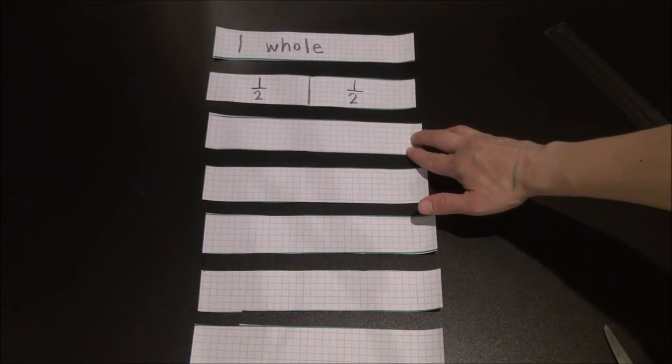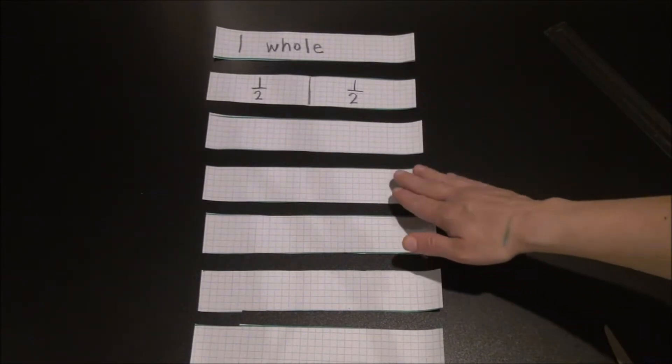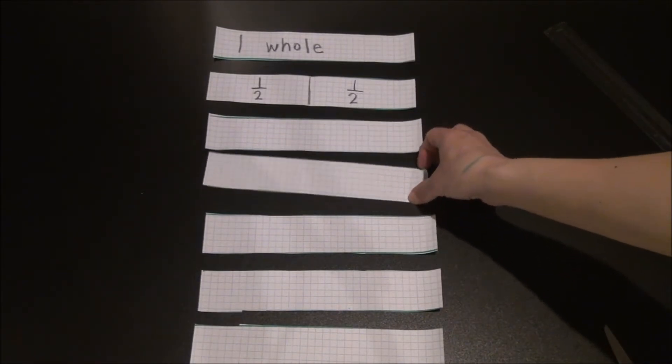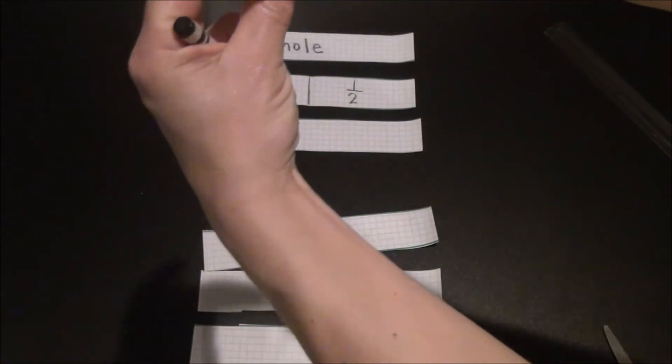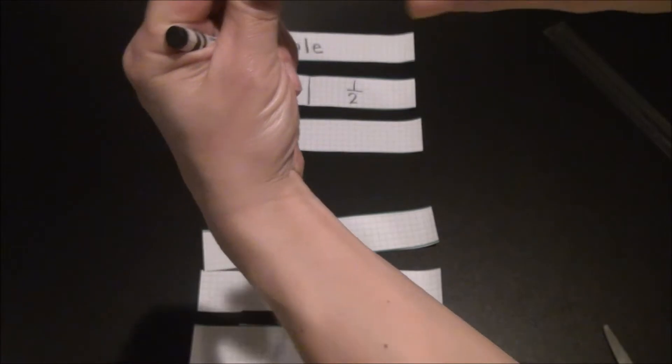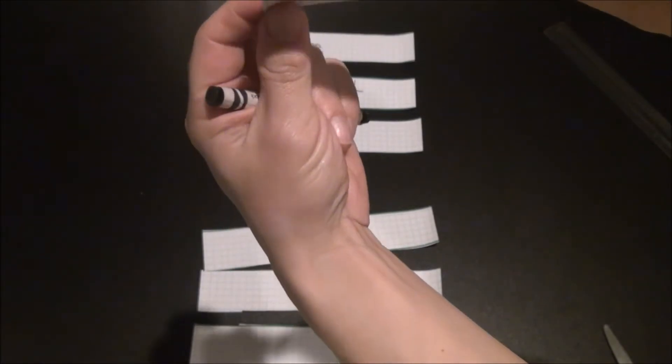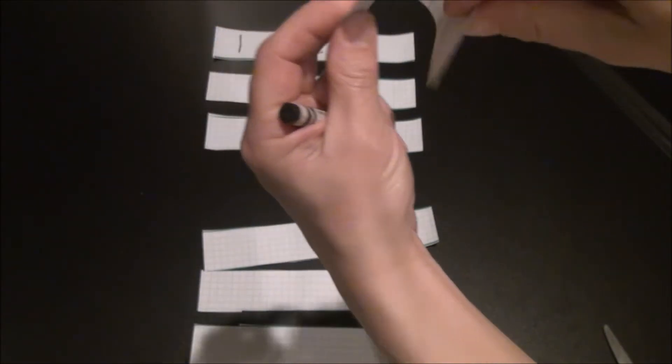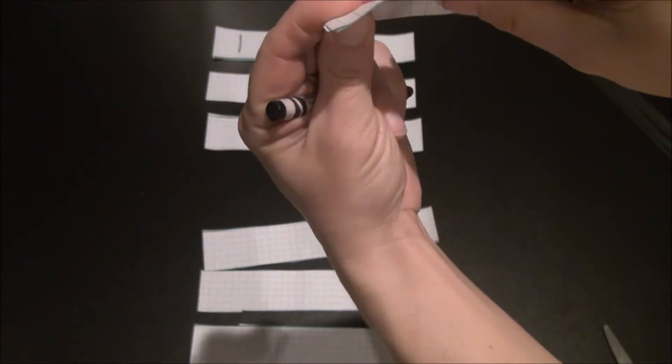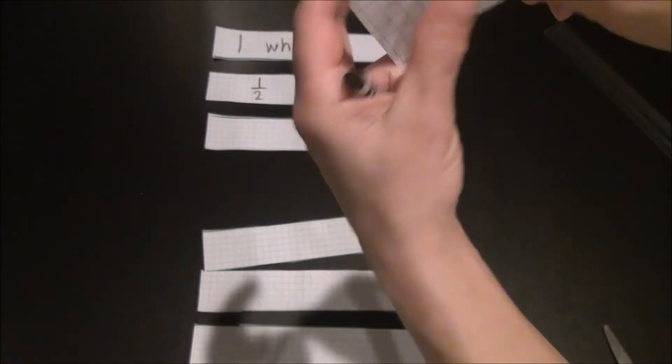This strip right here will represent thirds, but I'll come back to that in a minute. Let's go to the fourths. In order to partition this equally into fourths, I will start by folding the strip in half. Right now, I only have halves, but if I fold each of those halves in half, I will get my four equal parts for my fourths.